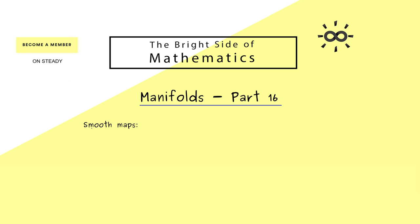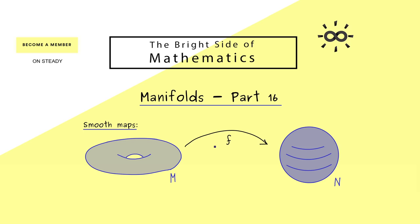Okay, and then I would say we can start with the topic of today, which is about smooth maps. So what we need to define this new concept are just two smooth manifolds, and one we can call M and the other one N. And then without any problems we can define maps between these manifolds.